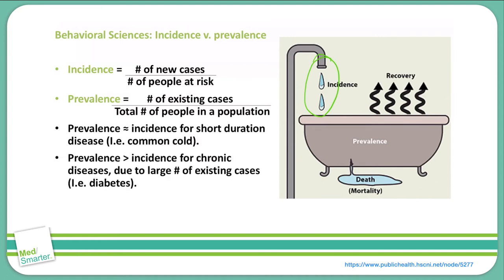Prevalence will be greater than incidence for chronic diseases, such as diabetes. We have a large number of patients living with diabetes, and that number will be larger than the new people coming in. As prevalence increases, we're going to increase our positive predictive value and decrease our negative predictive value.